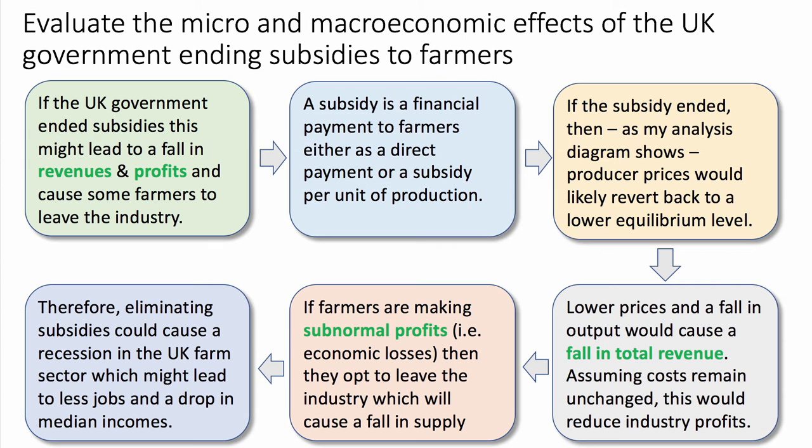If the subsidy ended, as my analysis diagram shows, producer prices would likely revert back to a lower level. The fall in prices and output would cause a fall in total revenue; assuming costs remain the same, this would reduce industry profits. If farmers are making subnormal profits — economic losses — they may opt to leave the industry, causing a fall in supply. Eliminating subsidies could therefore cause a recession in the farm sector, leading to fewer jobs and a drop in median farm incomes.